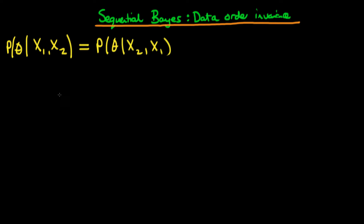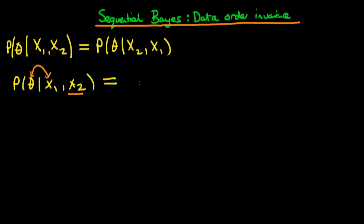The way we're going to prove this is by starting with the probability of theta given x1 and x2, and we're going to apply Bayes' rule on this between theta and x1, keeping x2 fixed. So x2 is not going to do anything here — we're just going to use Bayes' rule, which we know from before.